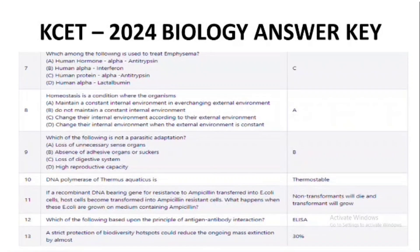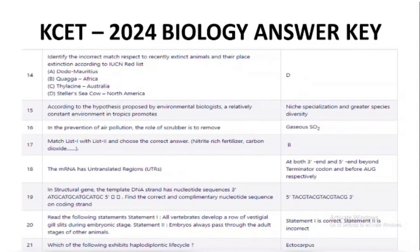Questions 7 to 13 are shown here with correct answers. Note that 'C' here does not mean option C — human protein and alpha anthropism is the correct answer. You can see we have given the correct questions and correct answers for this set as well.